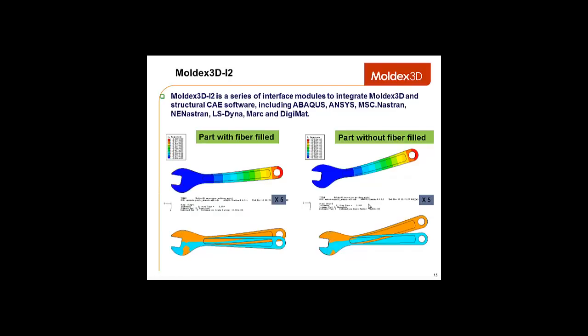Now, our I2 interface, or FAE interface, is a series of interface modules to integrate Moldex 3D and structural CAE software like Abacus, Ansys, etc. With this, you will be able to export fiber orientation data into these structural CAE softwares, and test that model with various loads as well as natural frequencies of whatever the structural analyses offer. Below, we can see the comparison of a part that is fiber-filled and one that is not.